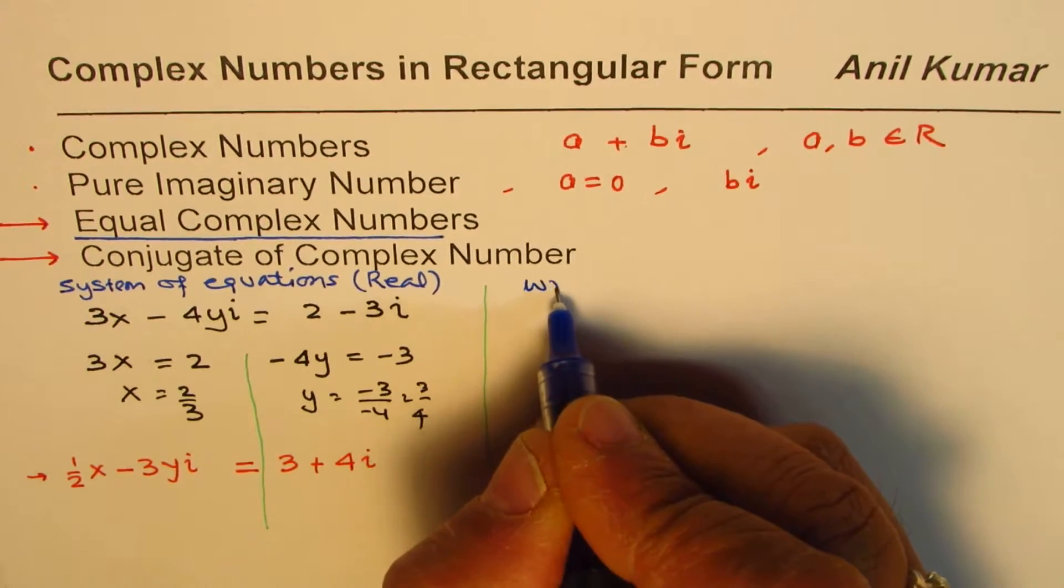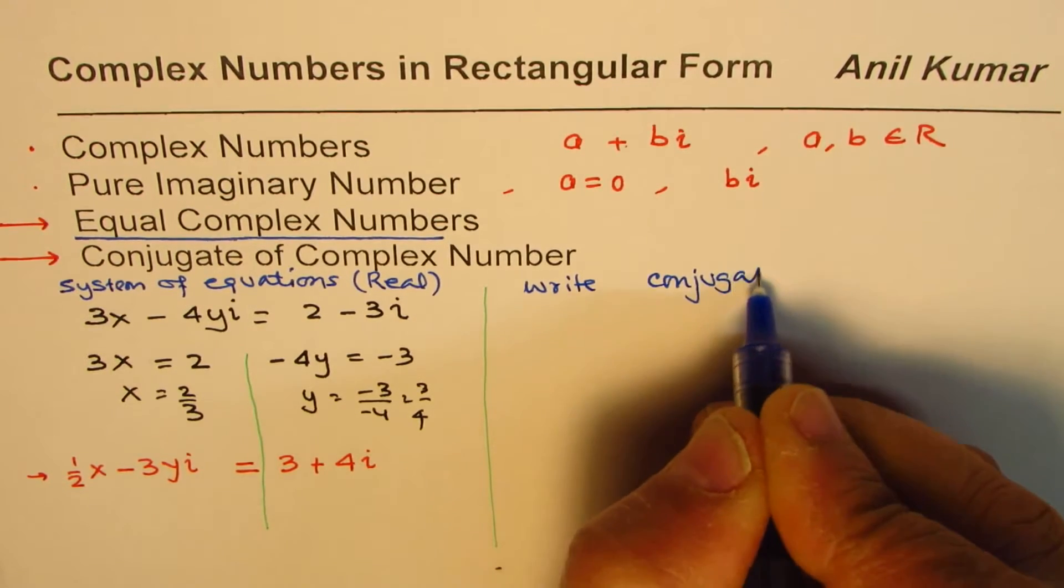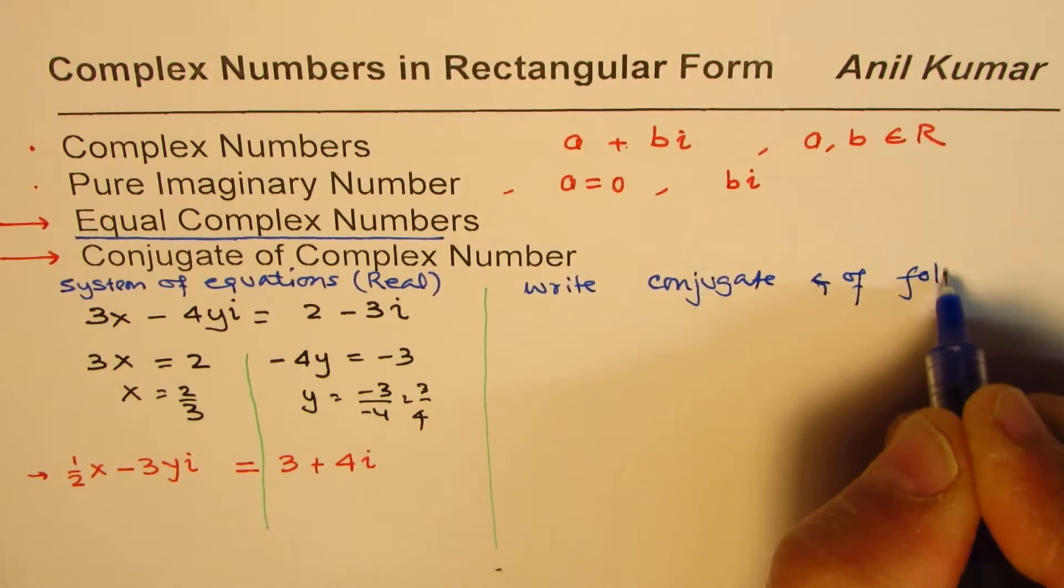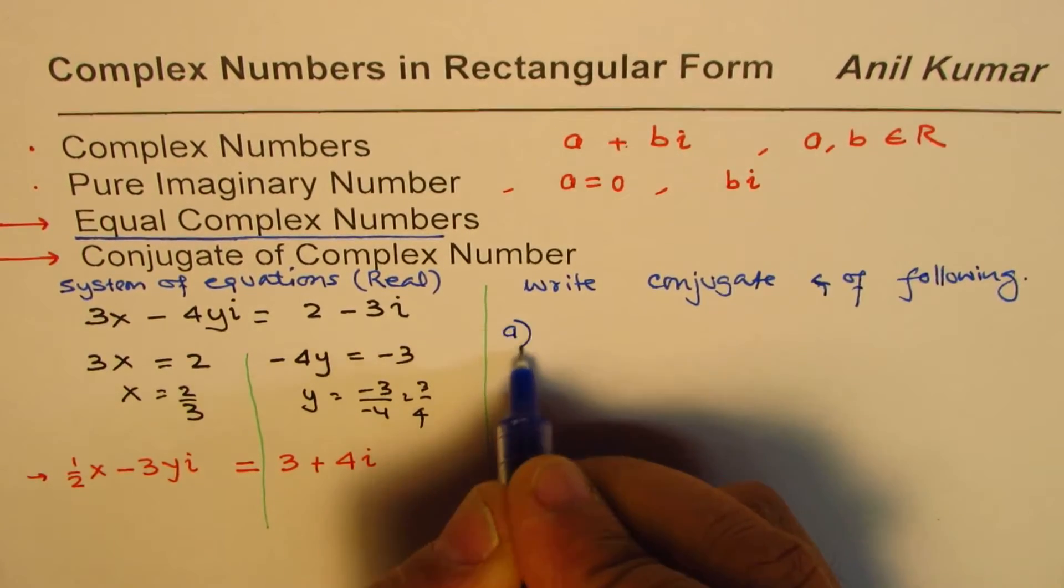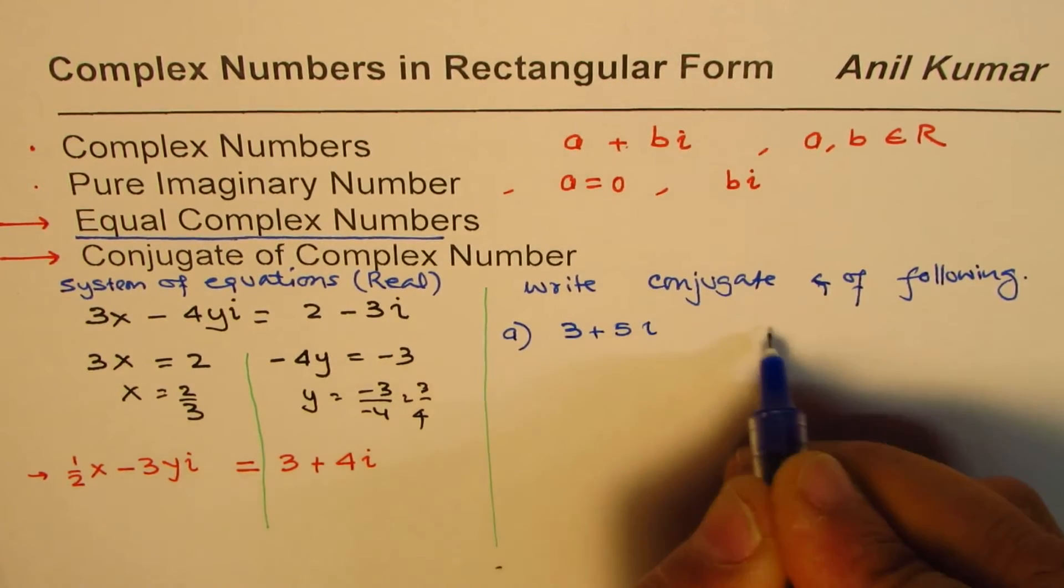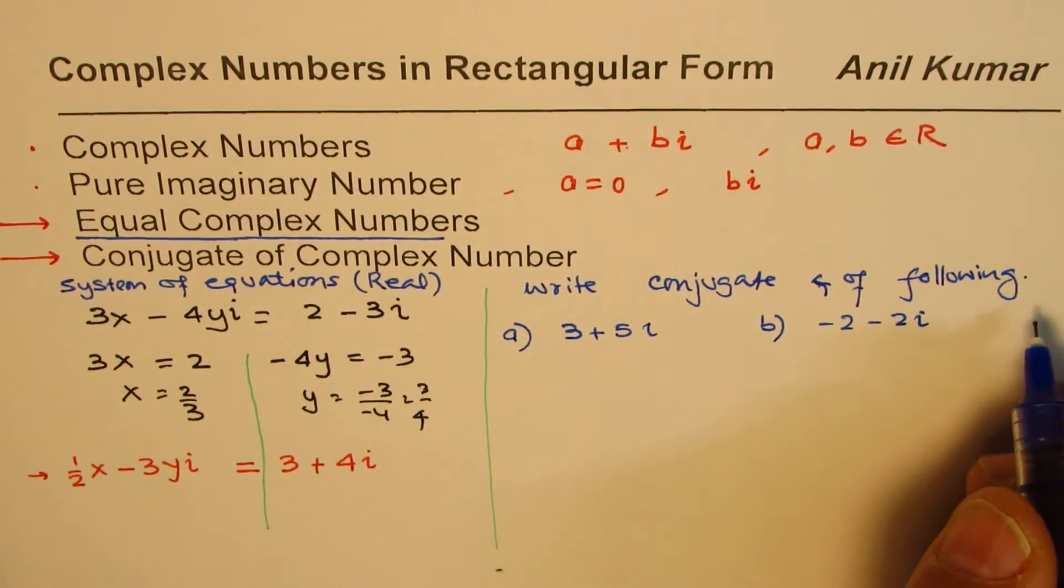What you need to do is write the conjugate of the following complex numbers. Let's say we have, for example, 3 plus 5i. Another example is minus 2 minus 2i.